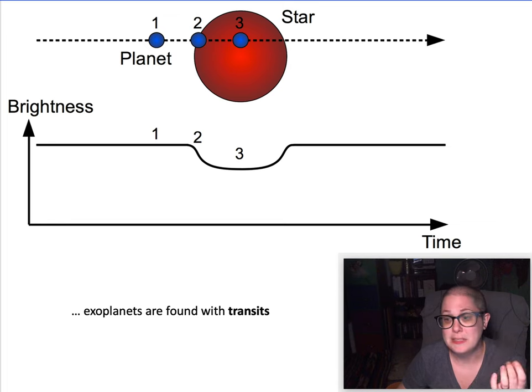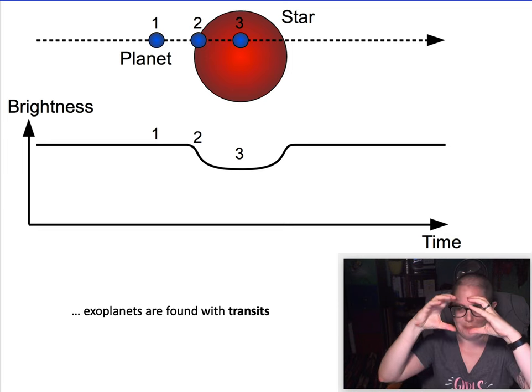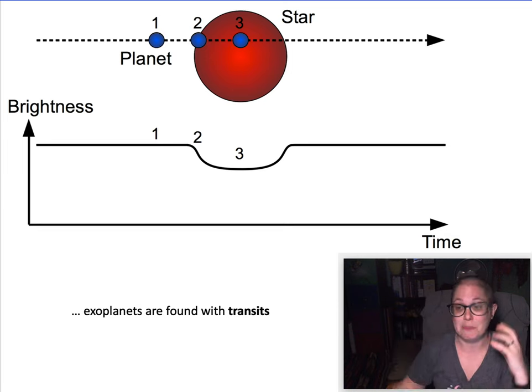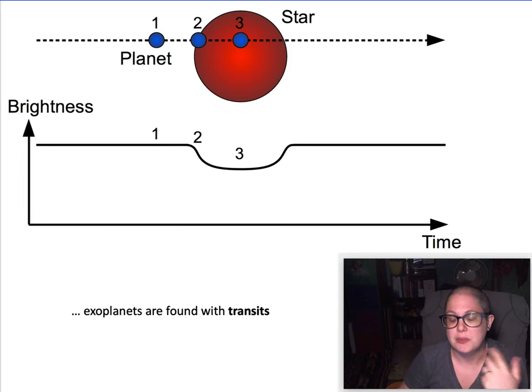So this transit method, by watching it over a long enough time you can get a period of the planet that tells you its average distance from its star. But because the transit depends on how big the planet is and how much light it blocks, it gives you a sense of the radius of the planet, the size of the planet, its diameter. So something to note, these two different methods: one gives you a handle on the mass, the other gives you a handle on its physical size, its radius.